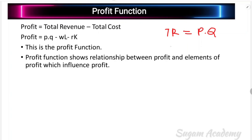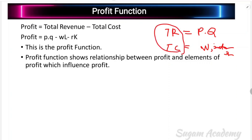Now, total cost — what the firm incurs — depends basically on the price of factors of production and the quantity of factors used. So total cost depends on factor prices and the quantity of factors employed in production.